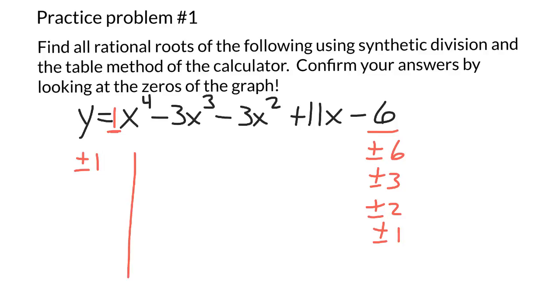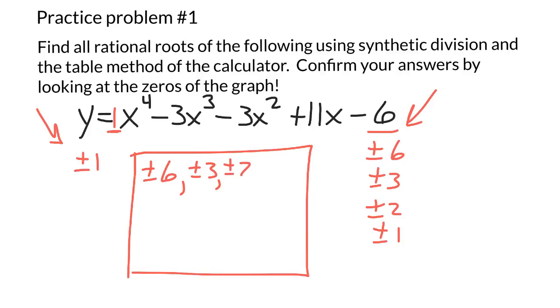And the actual possible answers here are all combinations of the constant's factors on top of the lead coefficient's factors. So 6 on top of 1 would be plus or minus 6, 3 on top of 1 would be plus or minus 3, 2 on top of 1 would be plus or minus 2, 1 on top of 1 would be plus or minus 1. So of all the possible numbers out there, we know that the rational roots of this particular problem have to be either plus or minus 6, plus or minus 3, plus or minus 2, or plus or minus 1.